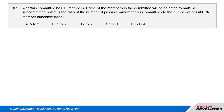Question 4. A certain committee has 15 members. Some of the members in the committee will be selected to make a subcommittee. What is the ratio of the number of possible four-member subcommittees to the number of possible three-member subcommittees?